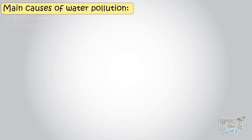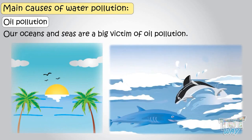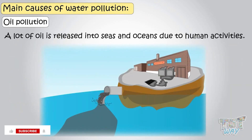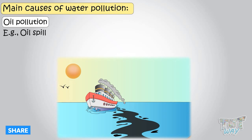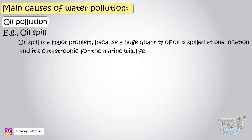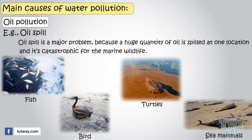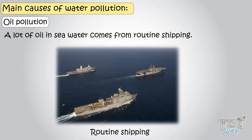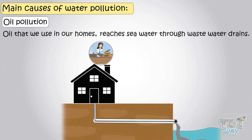Next is oil pollution. Our oceans and seas are a big victim of oil pollution, as a lot of oil is released into seas and oceans due to human activities like oil spills from huge oil tanks and ships. Oil spills are a major problem because a huge quantity of oil is spilled at one location and is catastrophic for marine life — many species of fish, birds, turtles, and sea mammals. Oil pollution is not only a result of oil spills, but a lot of oil in sea waters also comes from routine shipping, and oil that we use in our homes reaches sea water through wastewater drains.